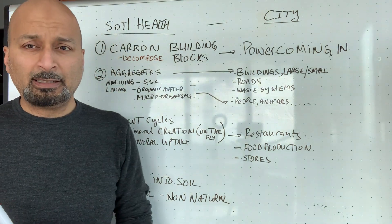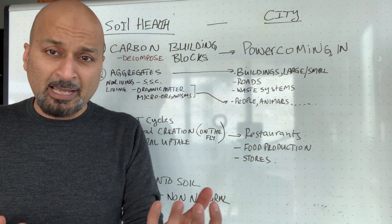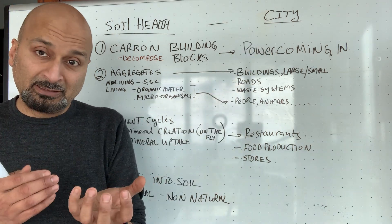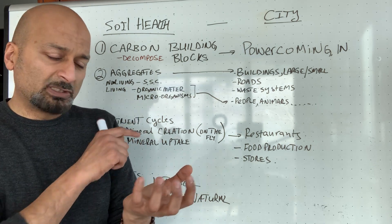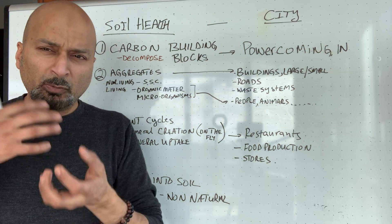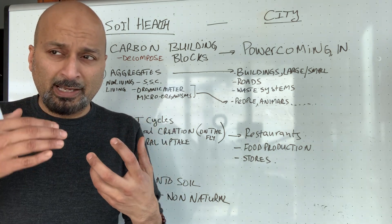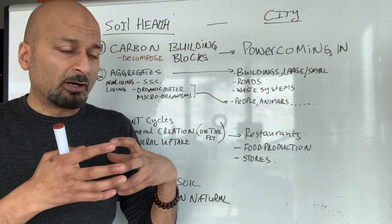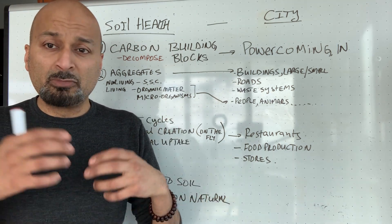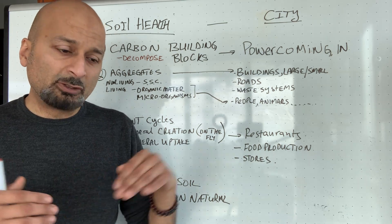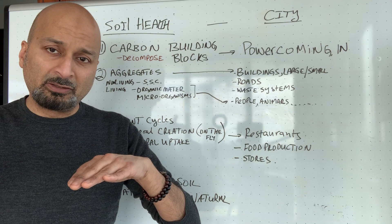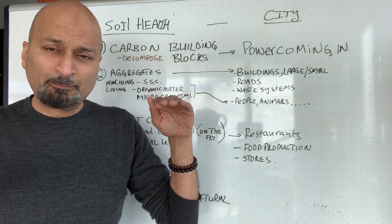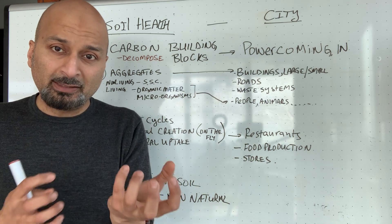So soil — if I were to pull out a handful of soil into my hands, I almost analogize it to a city, actually several cities, because it's made up of several aggregates which I'll talk about in a second. When you think about a city like Toronto, there are roads, highways, apartment buildings, grocery supermarkets, municipal waste systems, and living people — all working in a symbiotic, efficient, systematic way together. And soil is exactly the same way.